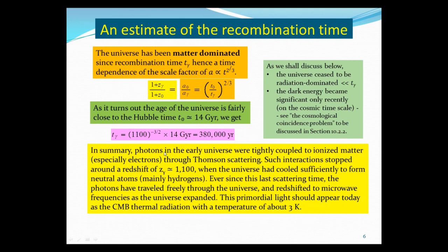So in summary, the photons in the early universe were tightly bound with ionized matter, especially electrons, through Thomson scattering. Such interaction stopped around redshift 1,100, when the universe had cooled sufficiently to form neutral atoms, mostly hydrogen. Ever since this last scattering time, the photons have traveled freely through the universe and redshifted to microwave frequency as the universe expanded. This primordial light should appear today as cosmic microwave background thermal radiation with a temperature around 3 degrees Kelvin. So let's end this first part of this lecture. See you next time.